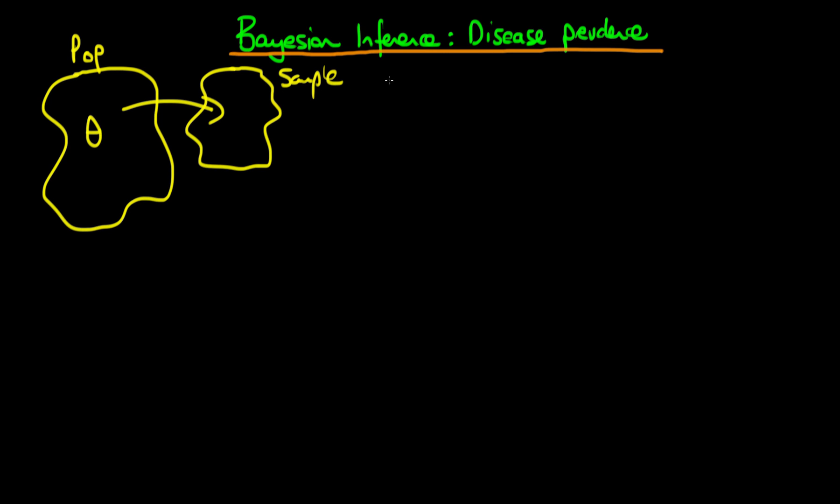And what I'm going to assume here is that essentially we've got a sample of, to begin with, 10 people, and out of those 10 people we find that only one of them has the disease.